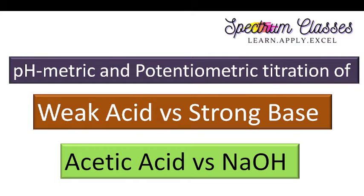Hello everyone, welcome back to Spectrum Classes. In this video we are going to discuss the pH metric and potentiometric titration of weak acid versus strong base. The weak acid taken here is acetic acid and the strong base is NaOH. I'm going to show you the lab activity and before that I'll tell you how to prepare the solutions for this pH metric or potentiometric titration.